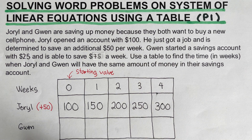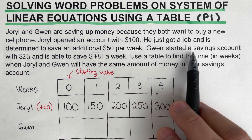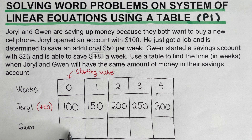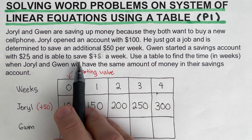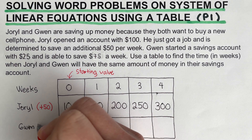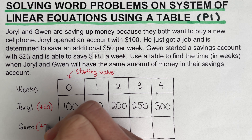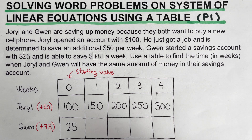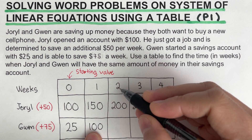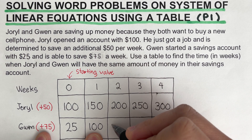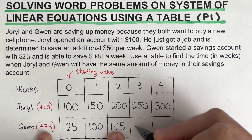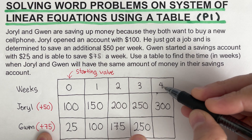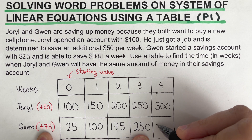Now for Gwen, going over the problem: Gwen started a savings account with $25, so the starting value at zero for Gwen is $25. It says she is able to save $75 a week, so Gwen will be adding $75 every week. On the first week, from $25 she added $75, coming out to $100. On the second week, $100 plus $75 is $175. On the third week, $175 plus $75 is $250. And on the fourth week, $250 plus $75 is $325.